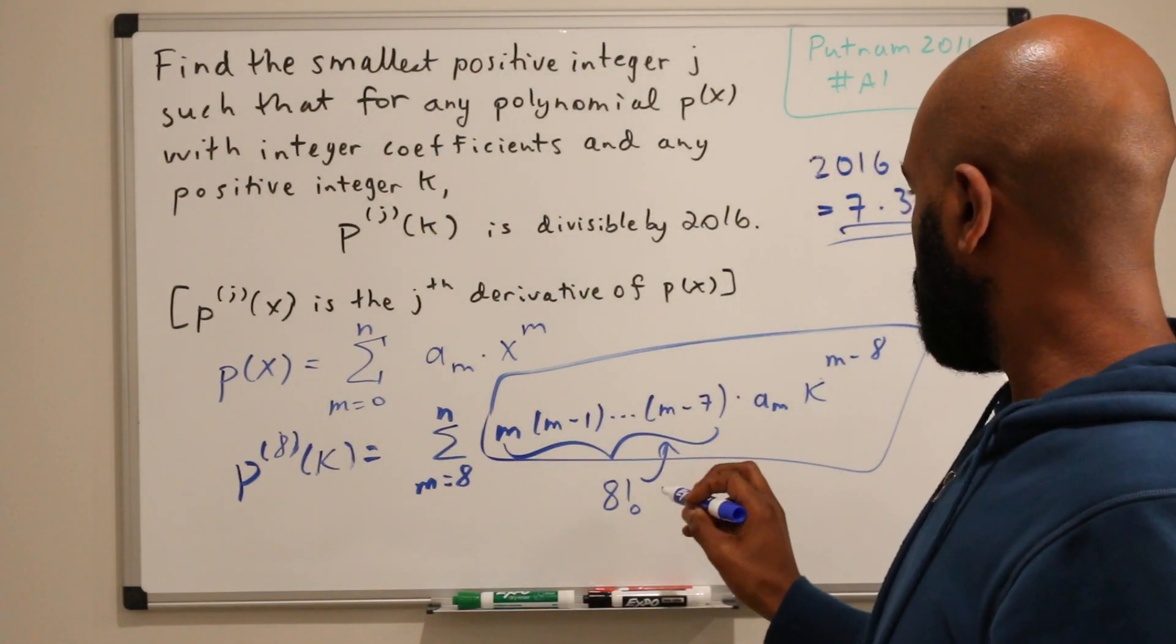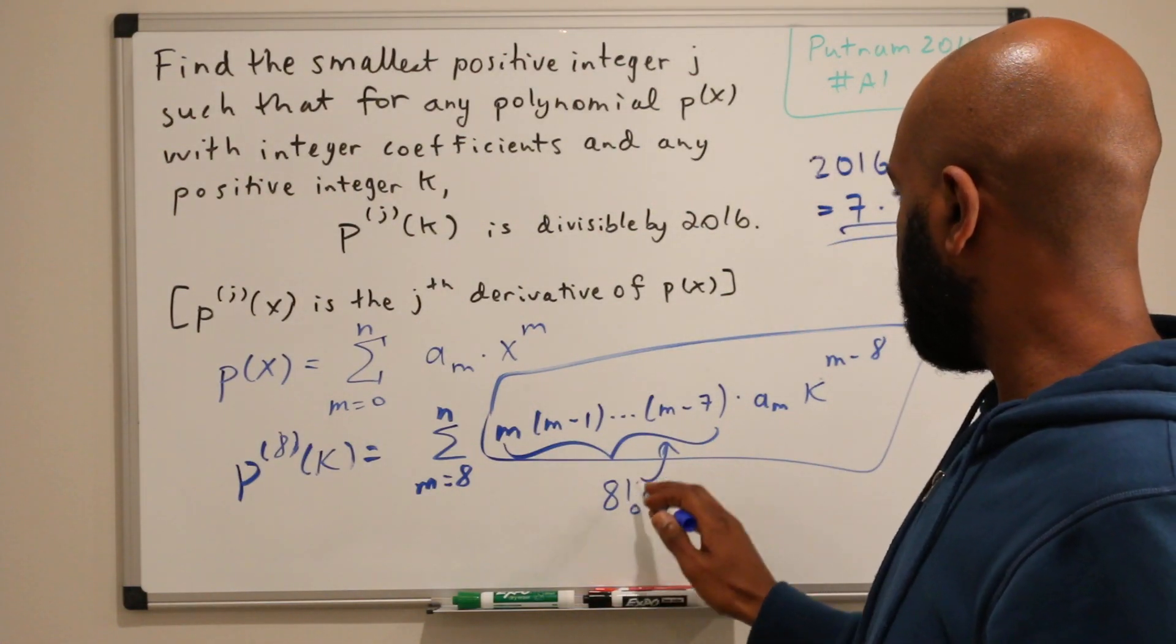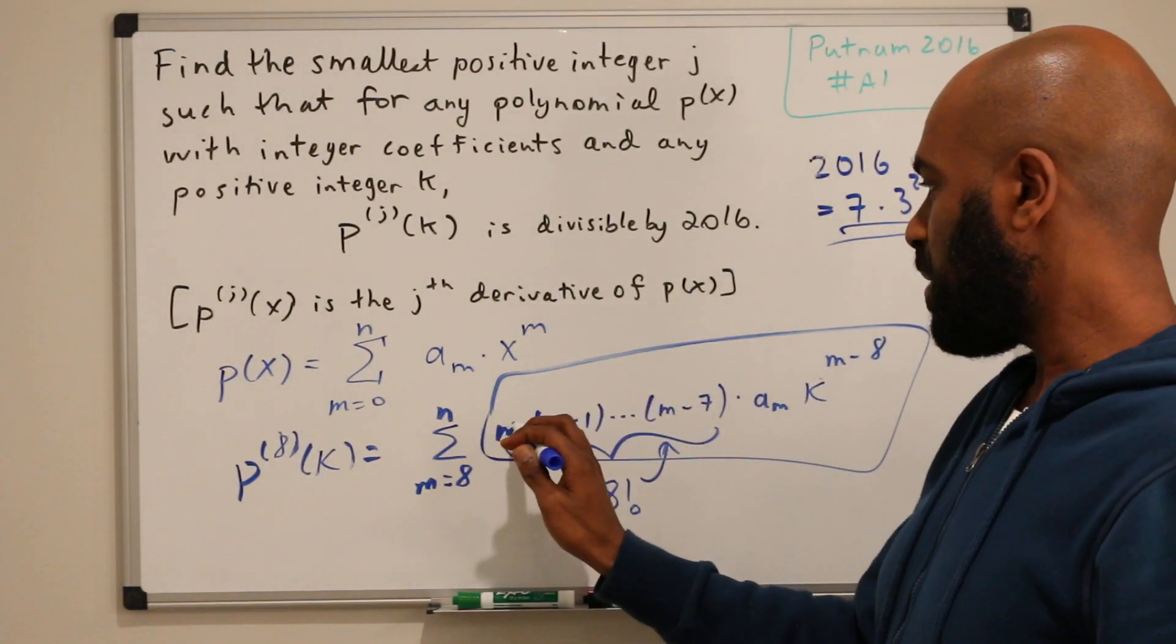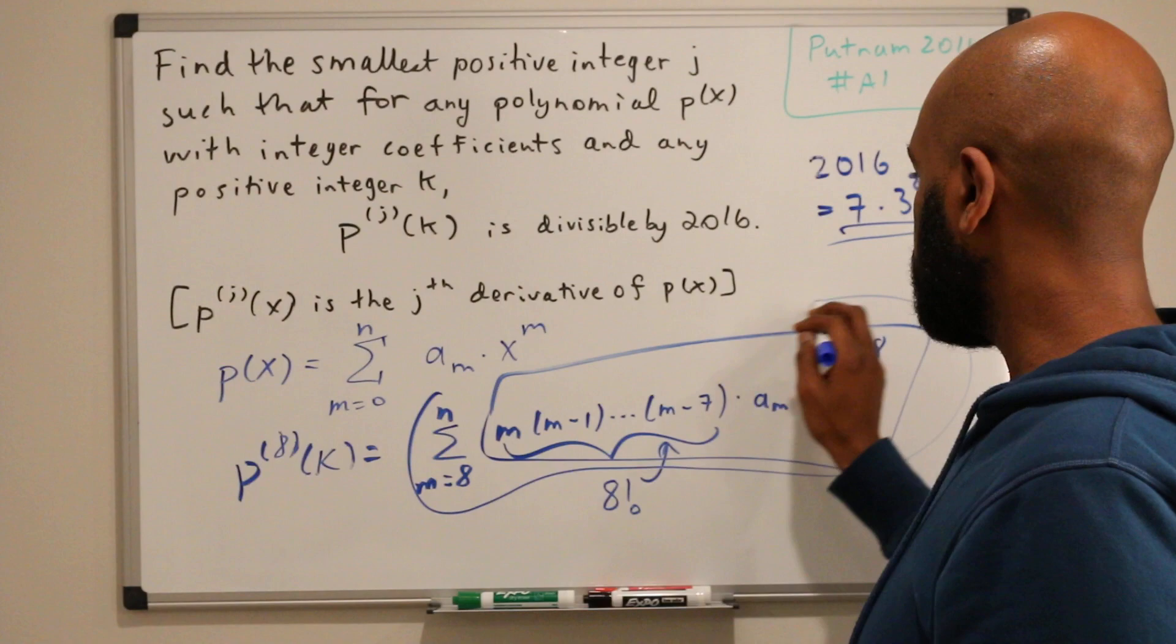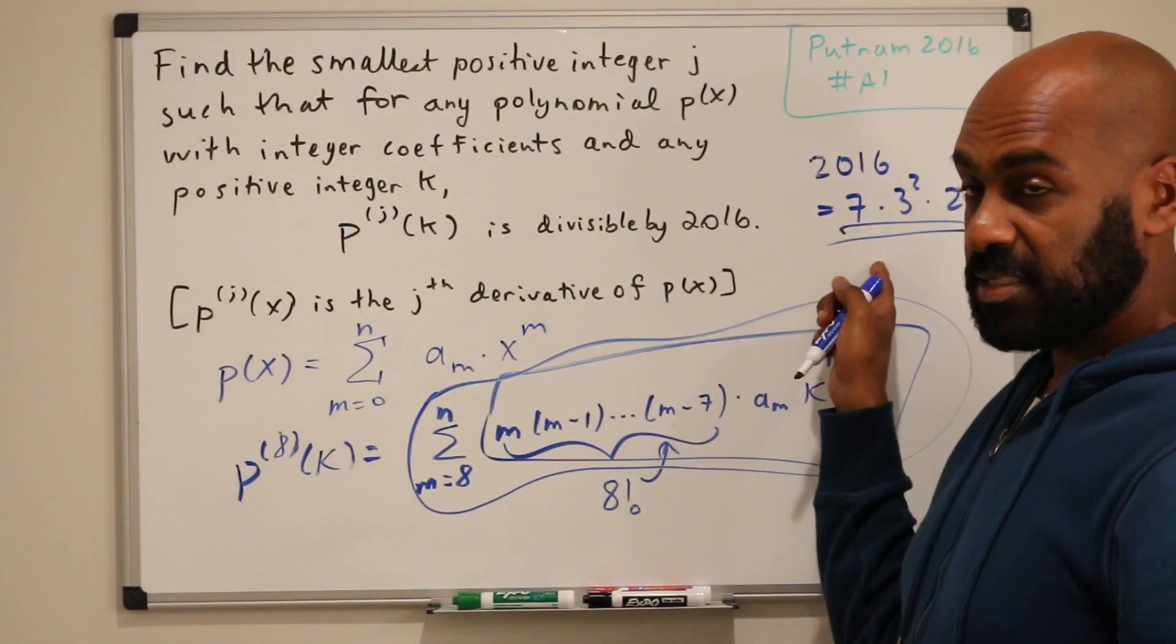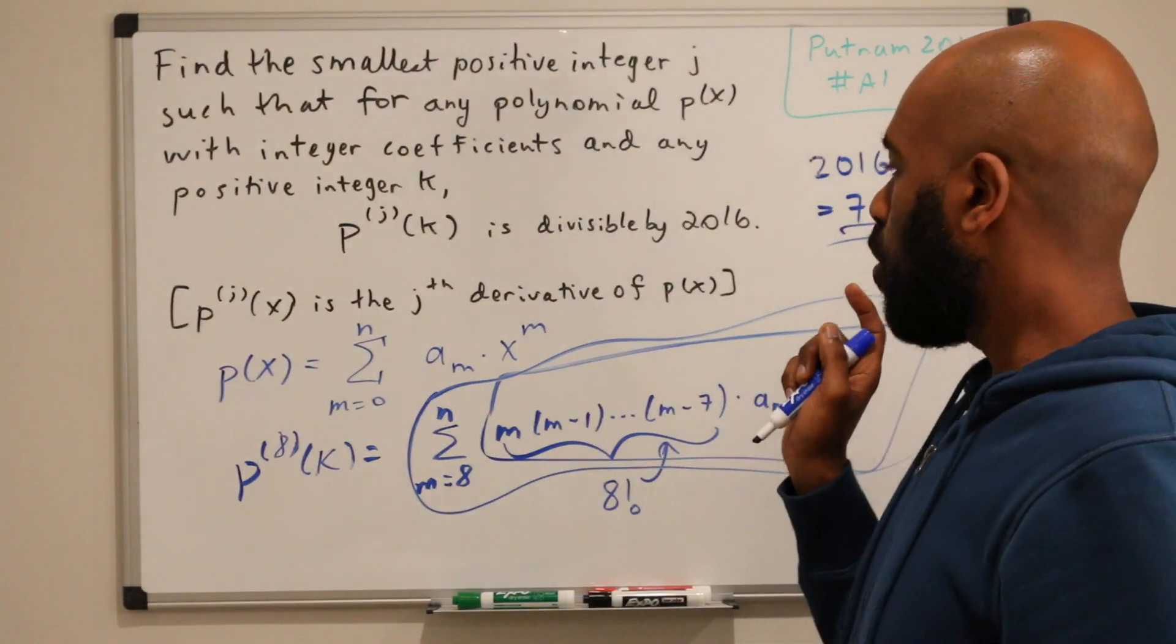Okay, so 8 factorial divides this expression here, which means it divides this summand, which means 8 factorial divides this entire sum. Right, and 8 factorial has 2016 as a factor.